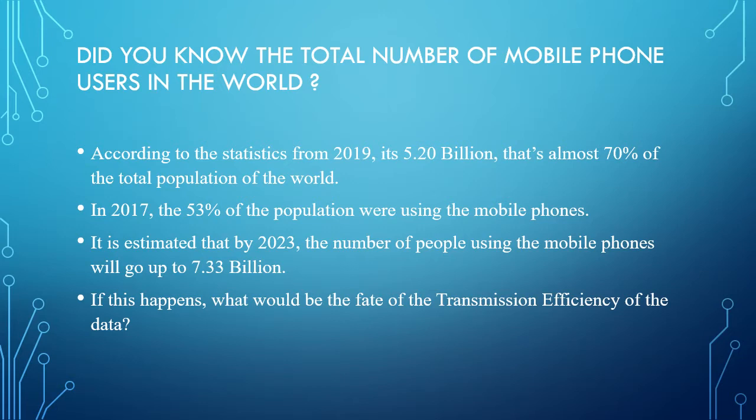Every one of us has a cell phone, and according to statistics, in 2017, 53% of the total world population possessed a cell phone — that is almost 3.6 to 3.7 billion people. In 2019, that number went up to 5.20 billion, almost 70% of the total population, and this number is estimated to go even higher by 2023, up to 7.33 billion people — almost 90% of the total population.